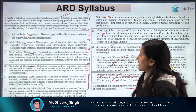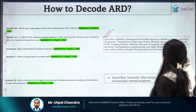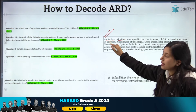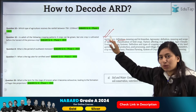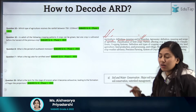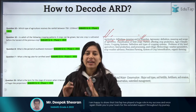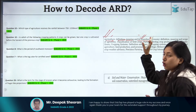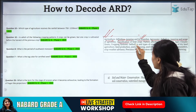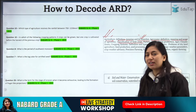Once you have done this exercise, pick one box at a time. For example, from the first box, you have terms like the definition of agriculture — so you need to know agriculture's definition, its meaning, and its branches. Then look at agronomy: its definition, meaning, scope, classification of field crops, the factors that affect crop production, and agroclimatic zones — how many there are and how they are classified.